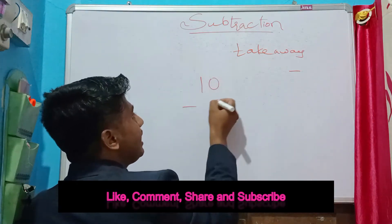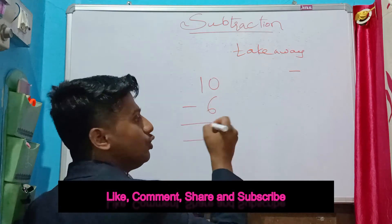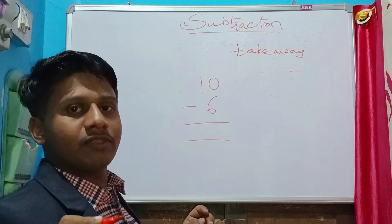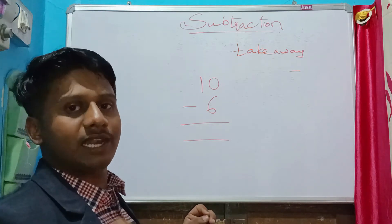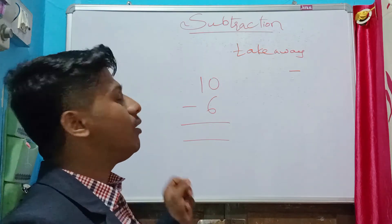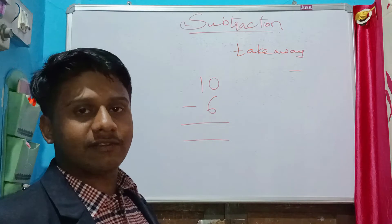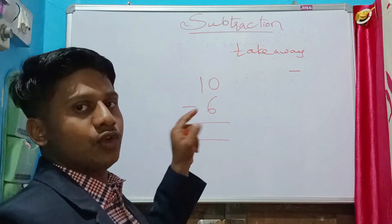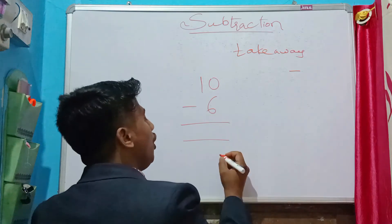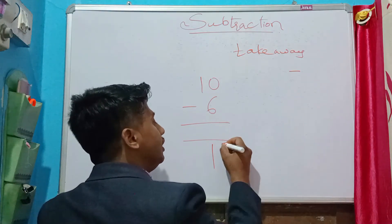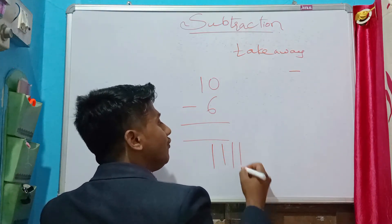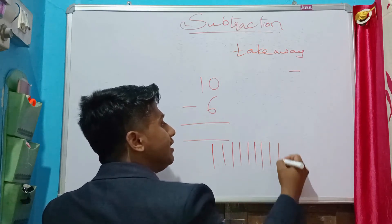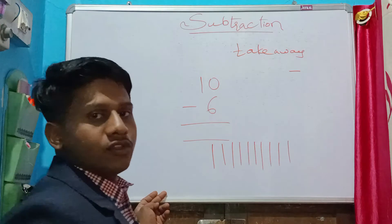Let's consider an example: 10 minus 6. I have shown two methods — using fingers and using lines. We will do these problems using lines. So the first number we have to consider is 10, which means I have to draw 10 lines: one, two, three, four, five, six, seven, eight, nine, ten.